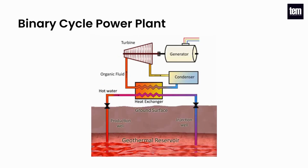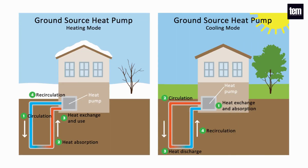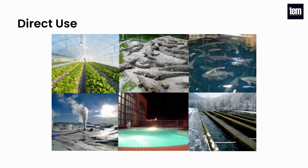Binary cycle power plants transfer the heat from geothermal hot water to another liquid by heat exchanger. The heat causes the second liquid to turn to steam, and the steam drives a generator turbine that produces electricity. Geothermal heat pumps use the Earth's constant temperature to heat and cool buildings. Direct heat sources are used for a variety of applications such as space heating and cooling, food preparation and drying, hot bathing, agriculture, aquaculture, greenhouses, and industrial processes.